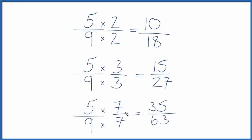If we multiply by 7 over 7, again, that's 1, we end up with 35 over 63. That's another equivalent fraction for 5 ninths.